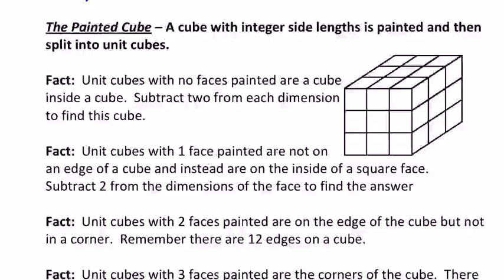A couple important facts for you to understand about this problem. First off, after it's been painted and split apart, there's four different possibilities. The first possibility is no faces painted. Well, the only way for no faces to be painted would be for it to be on the inside of this cube.